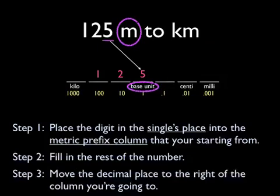Step 3 is to move the decimal place to the right of the column you're going to. Well, the decimal place starts to the right of the base unit column. And we have to decide where we're going to. In this case, we're going to the kilo metric prefix column, so it's going to go to the right of the kilo column.